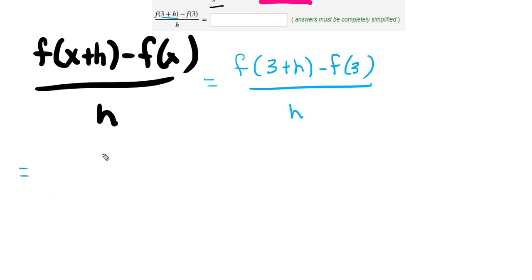So where I see an x in 1 over x, I'm going to plug in 3 plus h, minus where I see an x, I'm going to plug in 3, and then all over h.